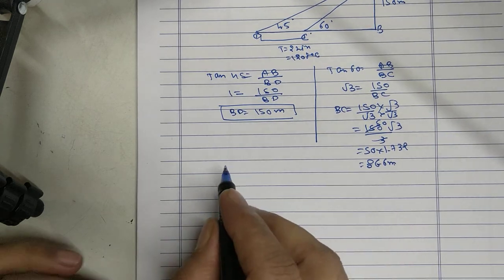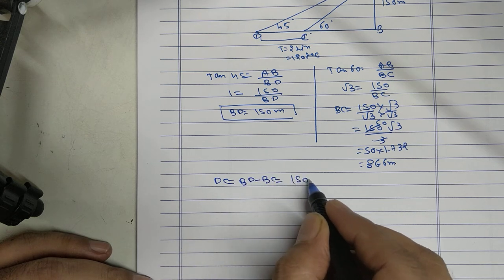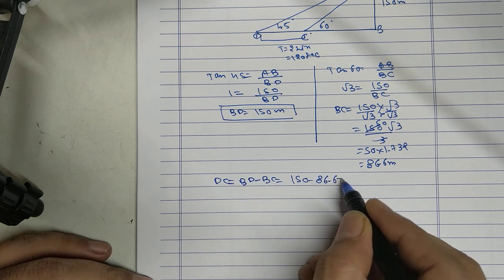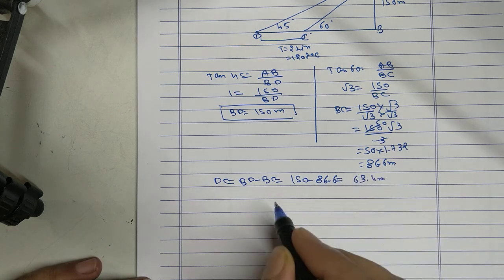That is equal to 86.6 meter. Find out DC. BD minus BC, 150 minus 86.6, that is equal to...